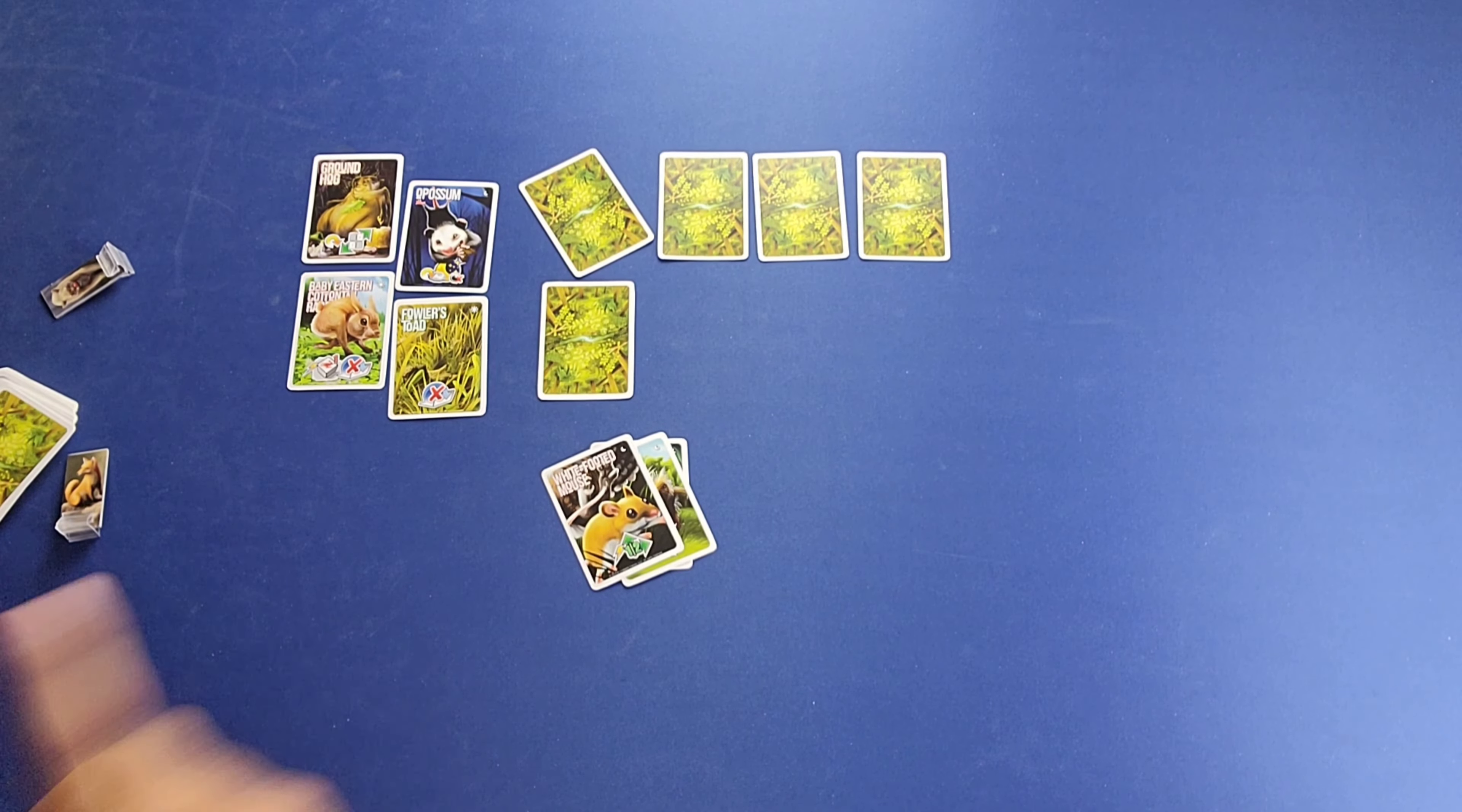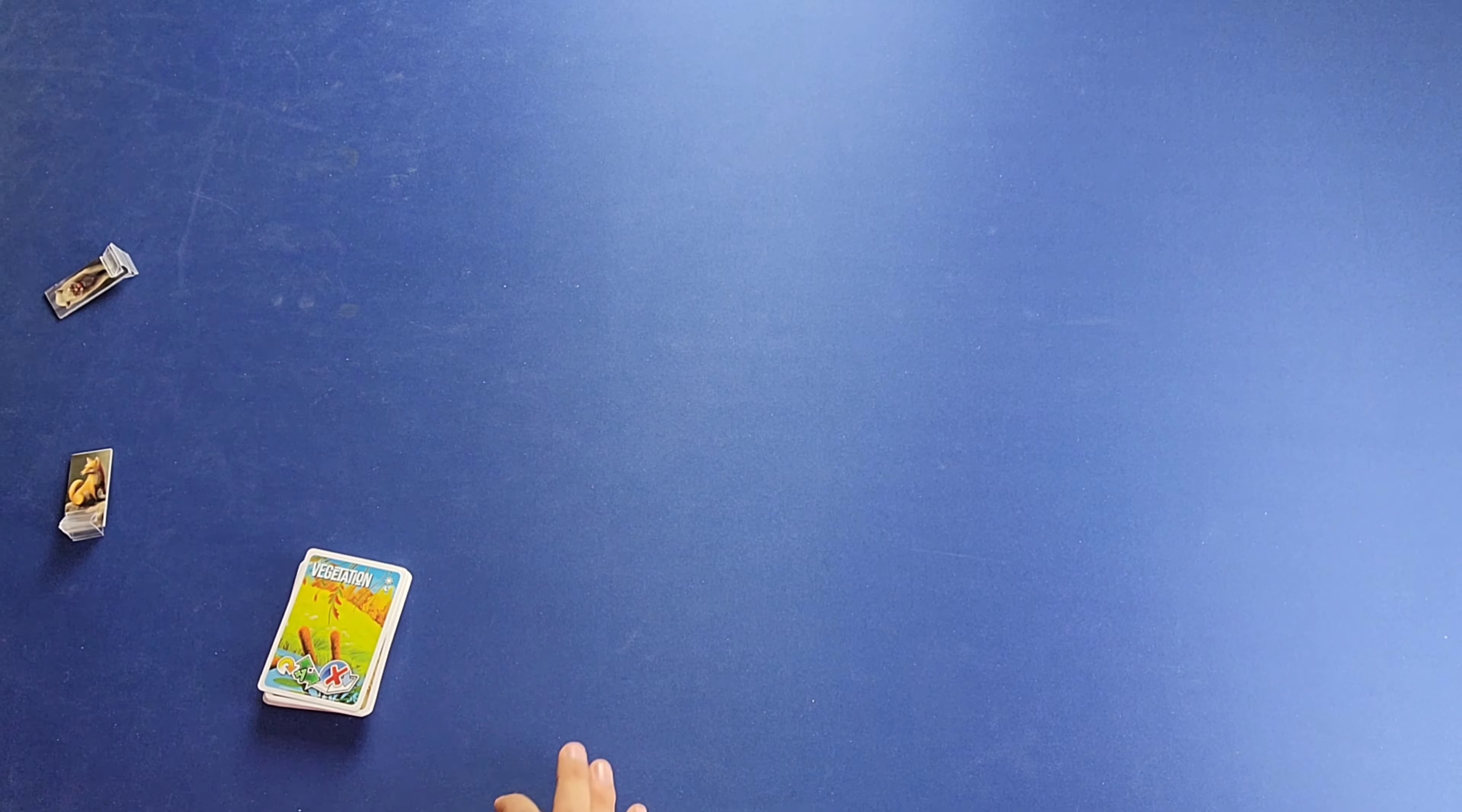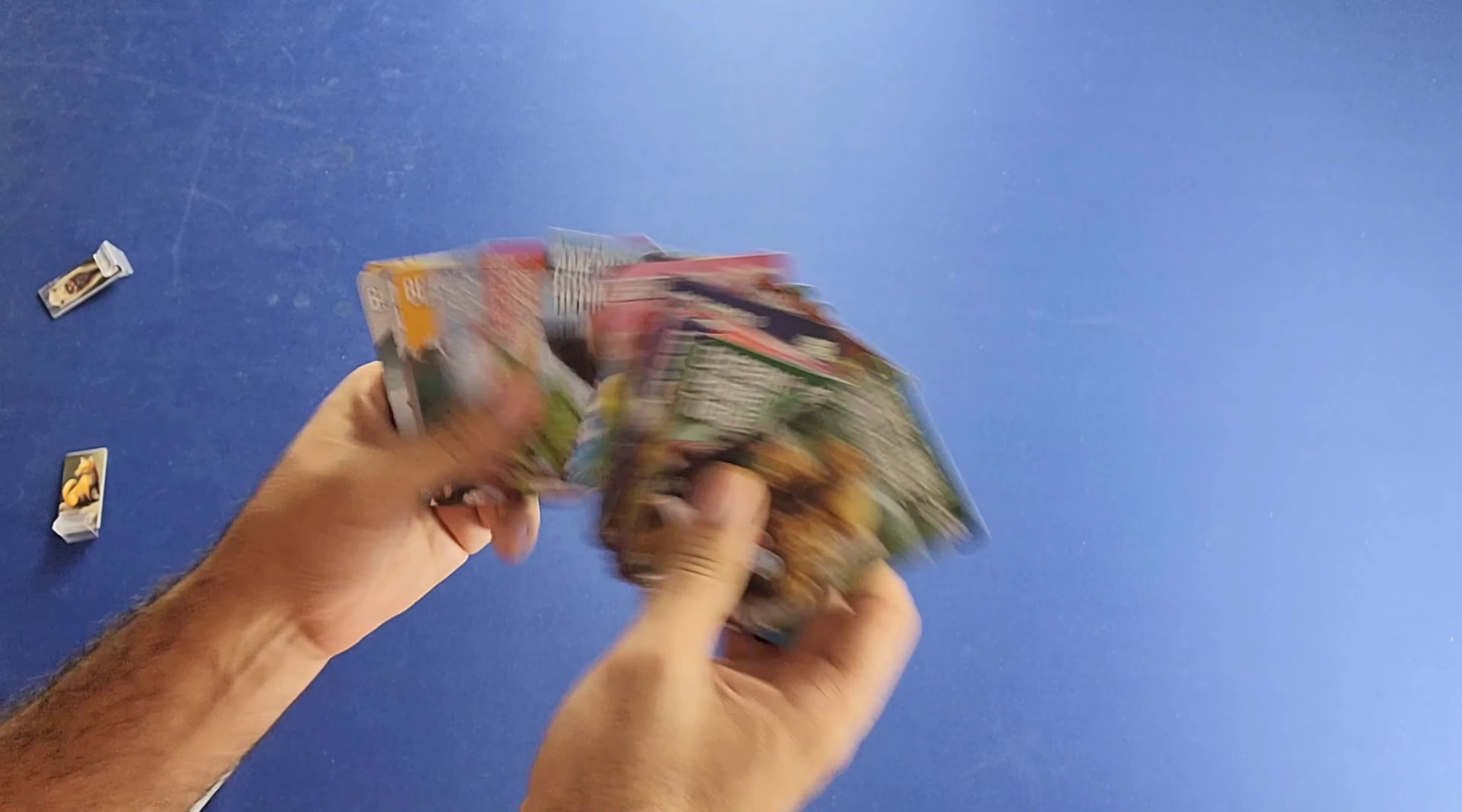You have the outfoxed version of the game where you basically play an abstract strategy game of sorts between two players, one versus one. And then you have a third version of the game, which is the prey version of the game. And that is for two to three players where players are basically combating against each other with their different animal cards. And you have a different set of cards for that version of the game.